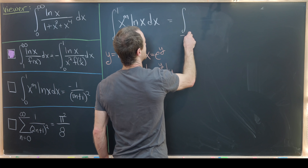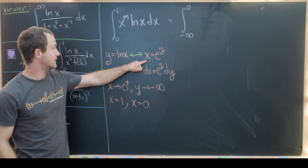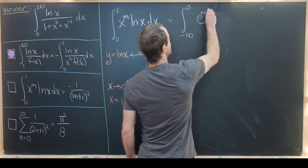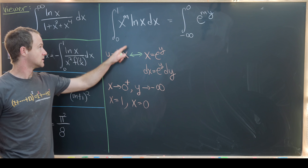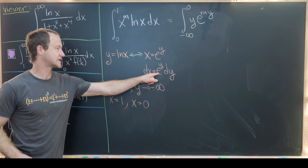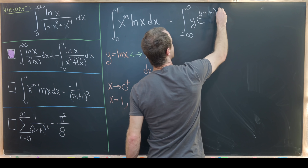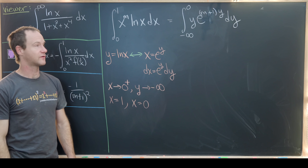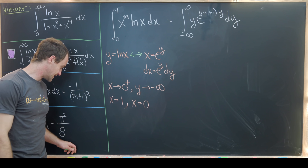After the change of variables we have the integral from minus infinity to 0 of: x to the m becomes e to the my, natural log of x becomes y, and dx becomes e to the y. Multiplying through, we get the integral from minus infinity to 0 of y times e to the (m+1)y dy. That is the integral set up perfectly for integration by parts.